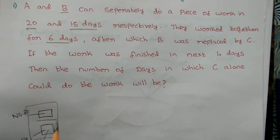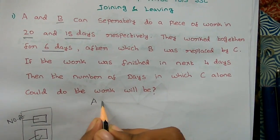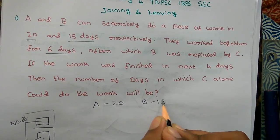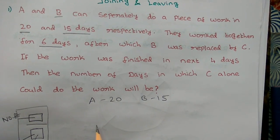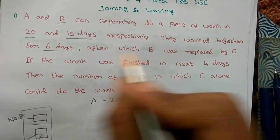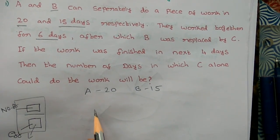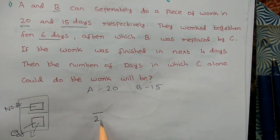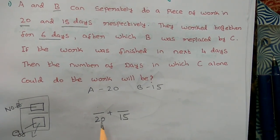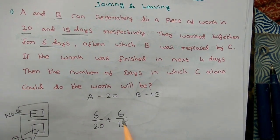Now let's take a look. A's efficiency is based on 20 days, B's efficiency is based on 15 days. The LCM of 20 and 15 is 60. So A's efficiency is 3 and B's efficiency is 4.